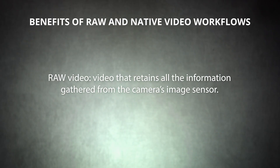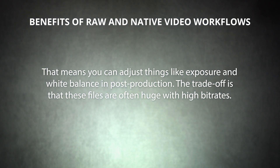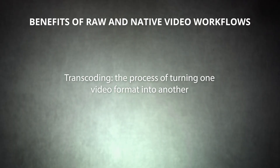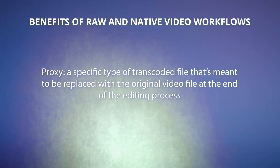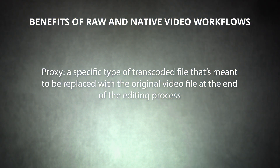Raw video is video that retains all of the information gathered from the camera's image sensor, meaning you can adjust things like exposure and white balance in post-production. The trade-off is that these files are often huge with high bit rates — they can be difficult or impossible to work with if you aren't prepared. So many editors choose to transcode their raw video into other formats before starting the editing process. Transcoding is the process of turning one video format into another, one that's more compatible with your editing system. A proxy is a specific type of transcoded file that is meant to be replaced with the original file at the end of the editing process.